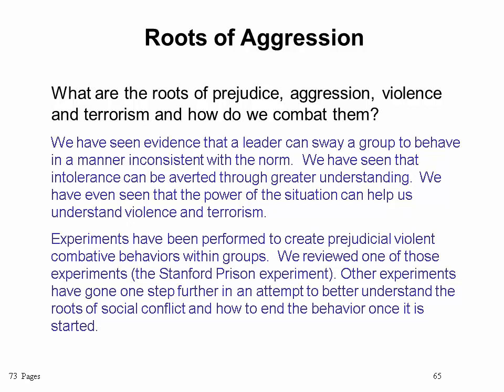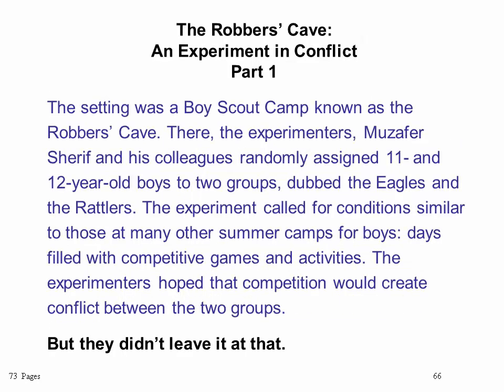So what are the roots of prejudice, aggression, violence, and terrorism, and how do we combat them? We have seen evidence that a leader can sway a group to behave in a manner inconsistent with the norm, especially if that leader has antisocial tendencies. We have seen that intolerance can be averted through greater understanding, and that the power of the situation can help us understand violence and terrorism. Experiments have been performed to create prejudicial, violent, combative behaviors within groups — one of those being the Stanford Prison Experiment with Dr. Zimbardo. Other experiments have gone further in an attempt to better understand the roots of social conflict and how to end the behavior once it has started.